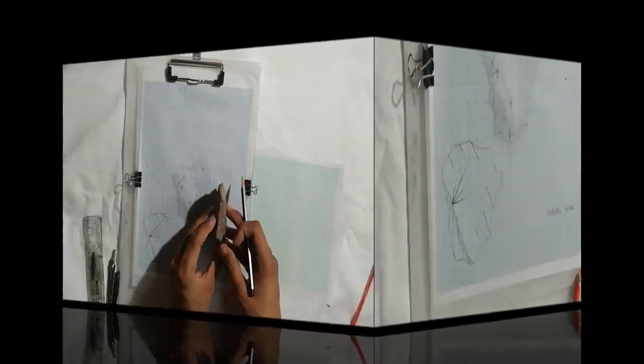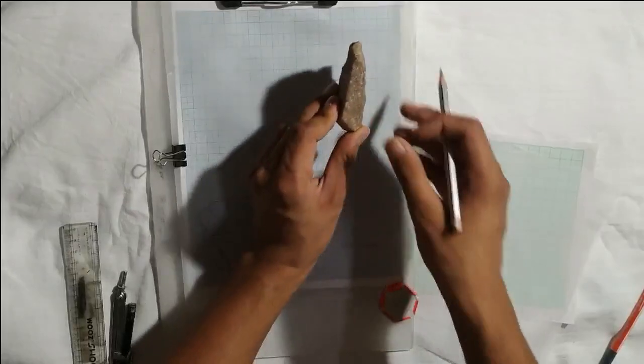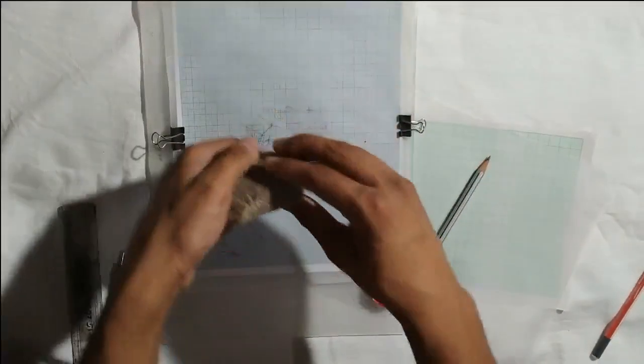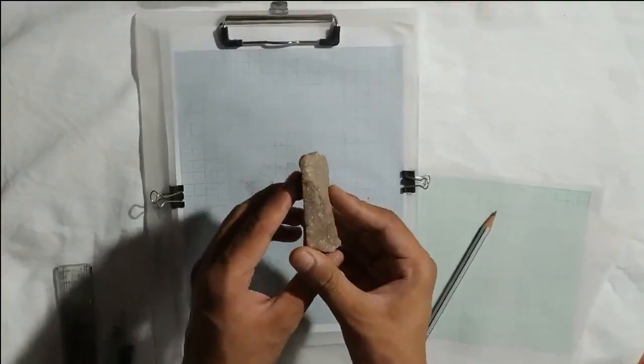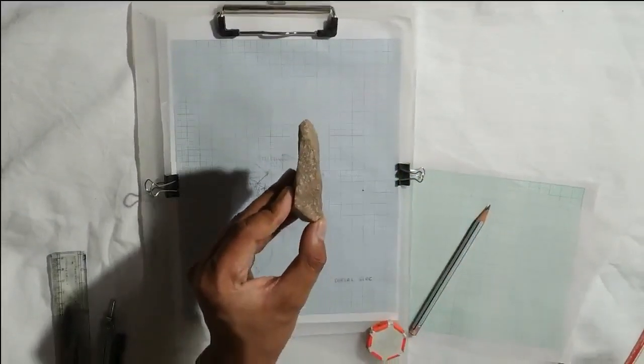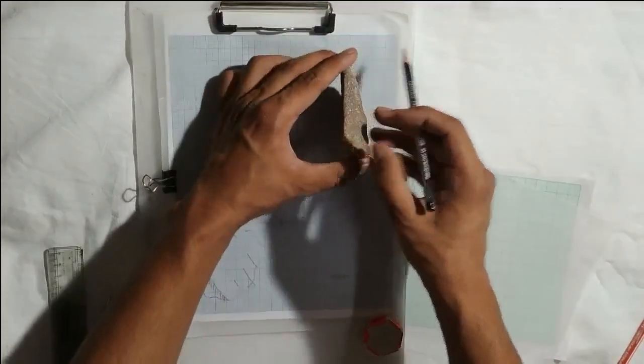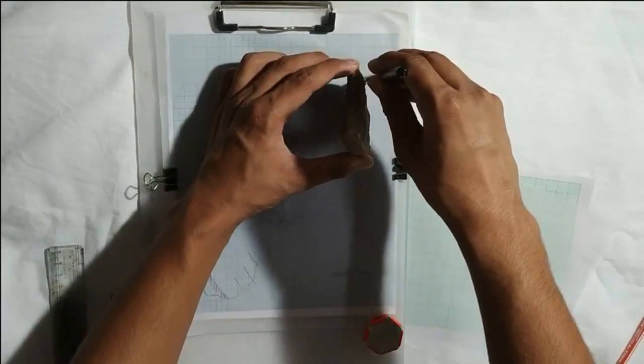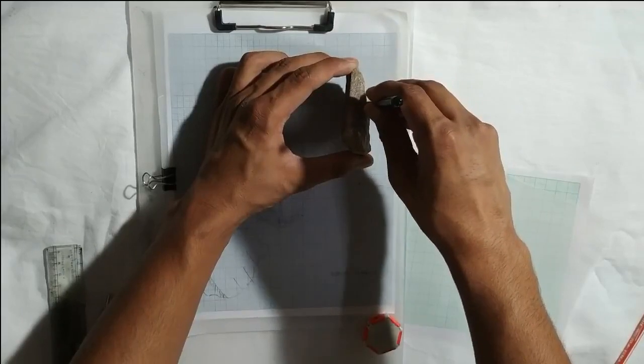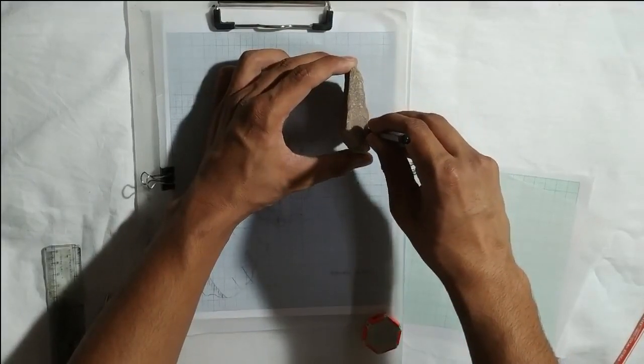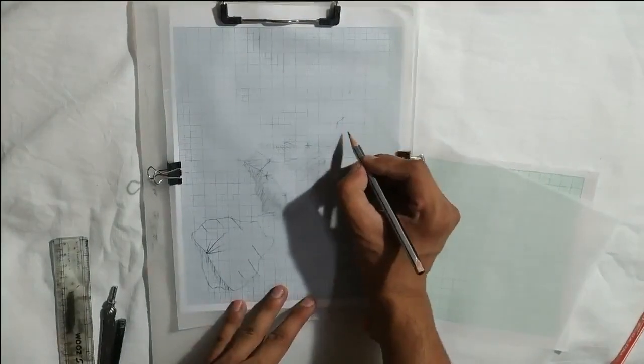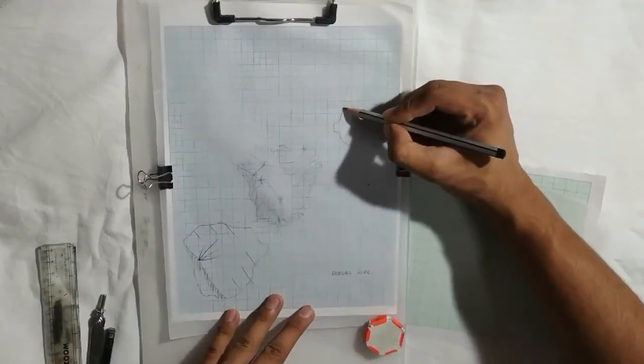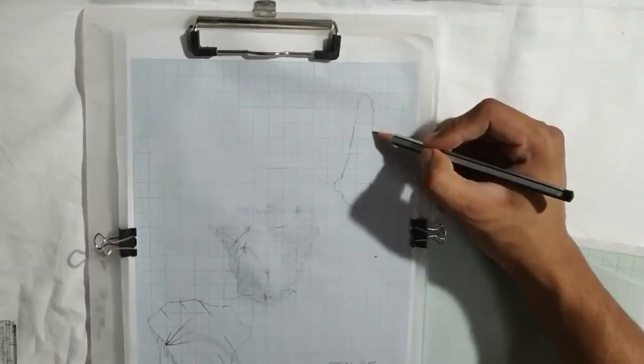Now, let us move towards the side profile. The representation of the side profile helps us gain insights into the thick section of the tool and the working edge of the tool. The process begins by drawing the perimeter as we have done before. And this will give us the side profile of our stone tool.